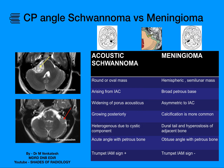Whereas meningioma is along the petrous surface or along the petrous bone, along the CP angle, but the internal auditory canal will be completely normal. Usually the acoustic schwannoma grows posteriorly. Another difference is that calcification is more common in meningioma.